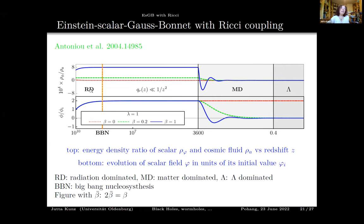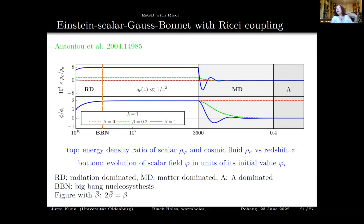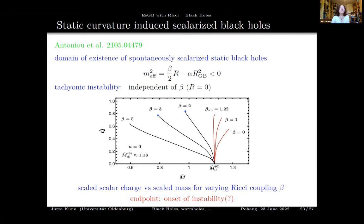Starting from some nonzero scalar field value that doesn't dominate the cosmos, the scalar field naturally goes to zero in the matter-dominated era. This is cosmologically favorable: by adding the Ricci coupling, one avoids observational problems from a persistent scalar field, and the GR limit is achieved naturally without fine-tuning.